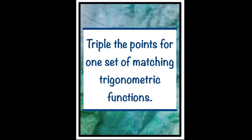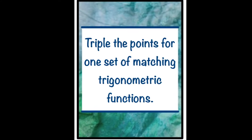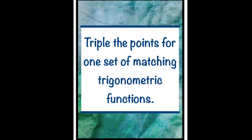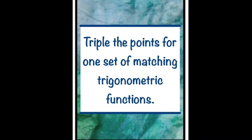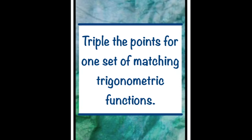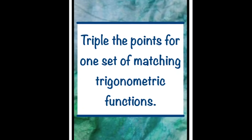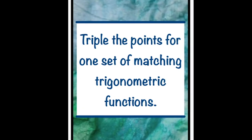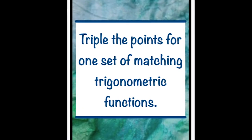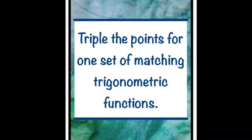There are two types of bonus cards. The first is a triple the points card. Apply this card to one trig function family — sine, cosine, or tangent — and triple the value for that function family when scoring the round.